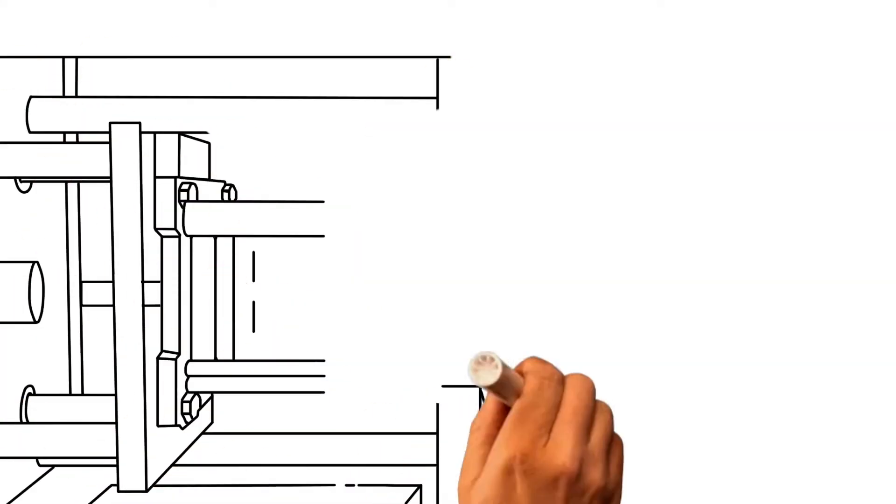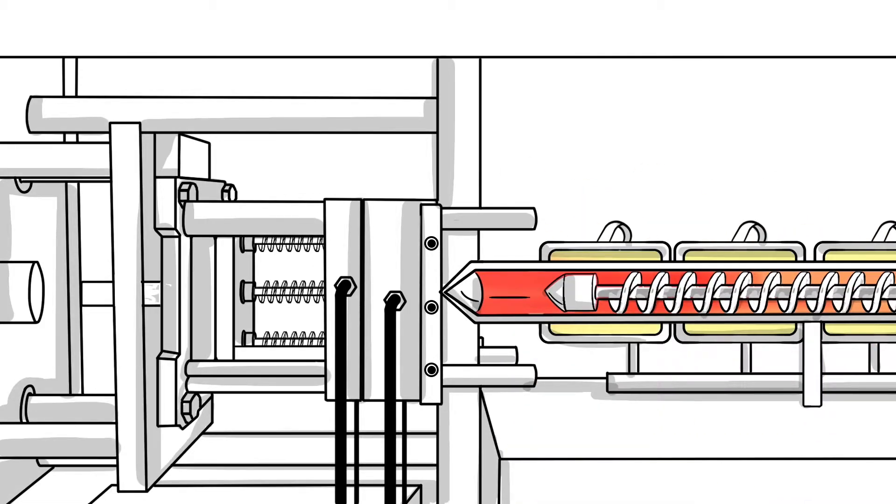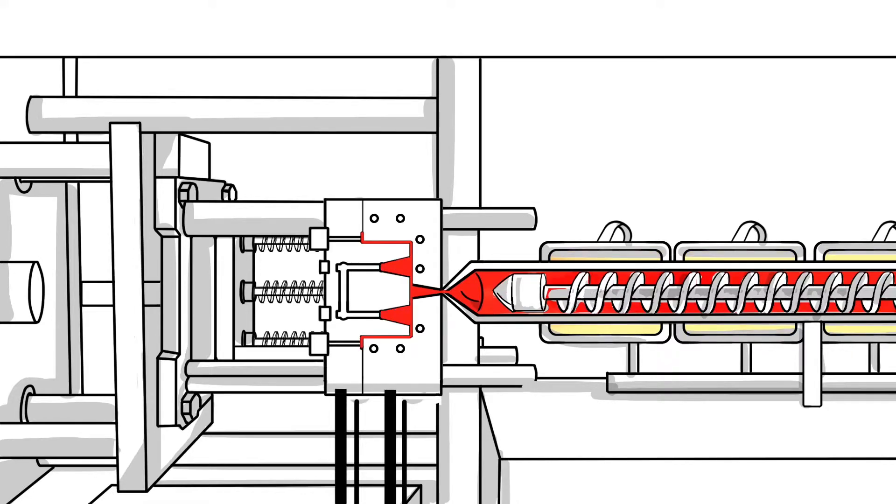When a set volume of melted material accumulates ahead of the screw, the screw stops rotating. The material in front of the screw is then injected through the nozzle into the mold cavity. This is called the fill portion of the injection molding cycle.